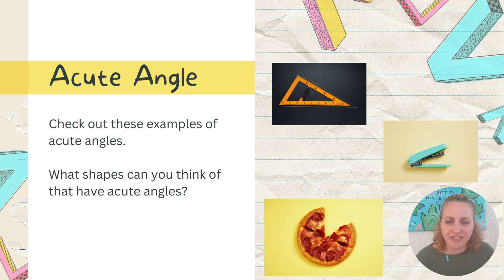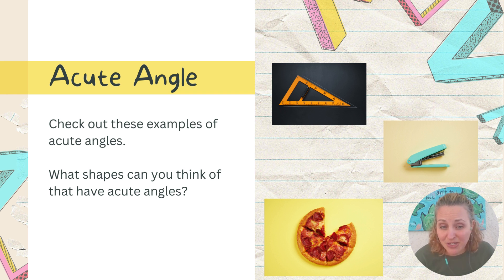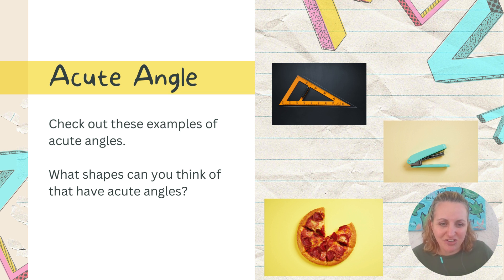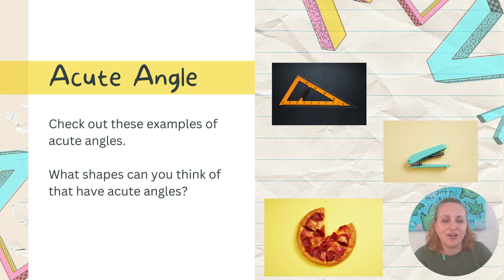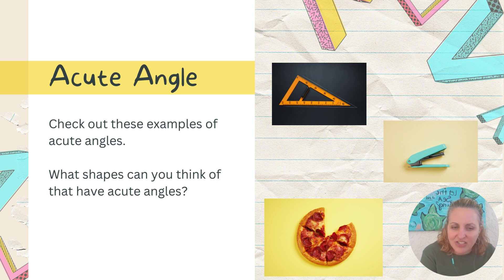Here are some examples of acute angles you may have seen. The first is a tool used in building and construction. The second is a stapler — it opens up at an acute angle. And the third, my favorite: pizza! Each pizza slice is an acute angle. Those are real-world examples of acute angles. Can you find any other acute angles in your house? Go ahead and pause and look around.